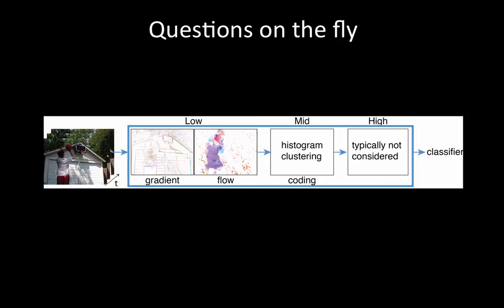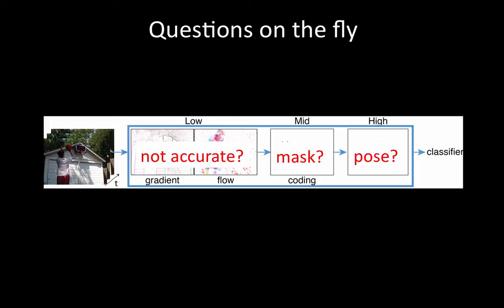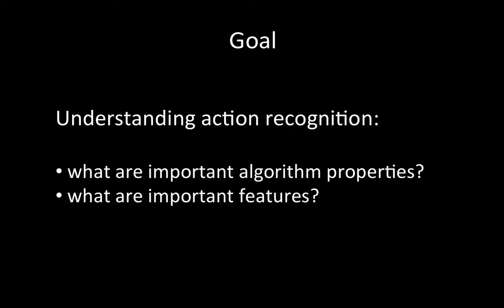With such an approach, we may wonder how the accuracy of low-level features affects the overall accuracy, whether we should consider features within human masks, and whether high-level pose features will perform better than flow-based features. To address all these questions, here we use annotated data to help understand action recognition algorithms. Specifically, we want to answer what are important algorithm properties and features.